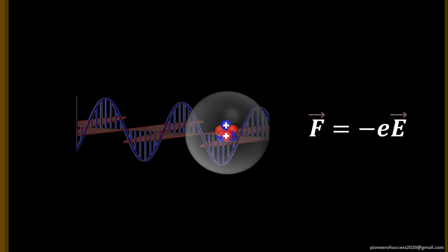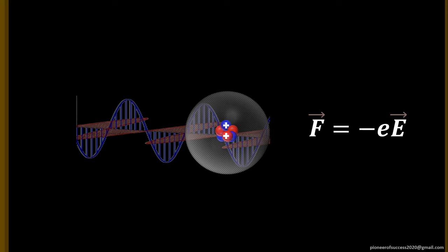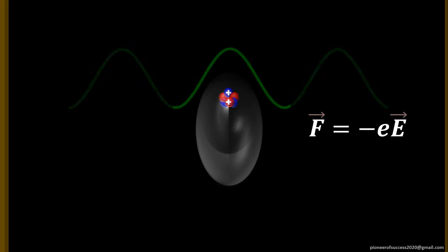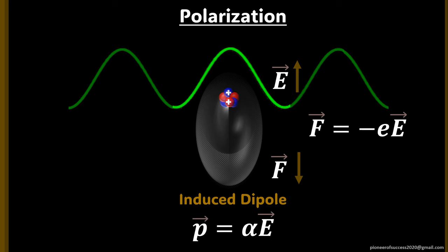Since electrons are lighter in weight, they respond more quickly to the force exerted by the electric field, and thus get displaced from the positively charged core in a direction opposite to that of the incoming electric field. This displacement — the separation of charges — causes a temporary dipole inside the molecule, called the induced dipole. The whole phenomenon of the formation of this induced dipole is termed as the polarization of the molecule.